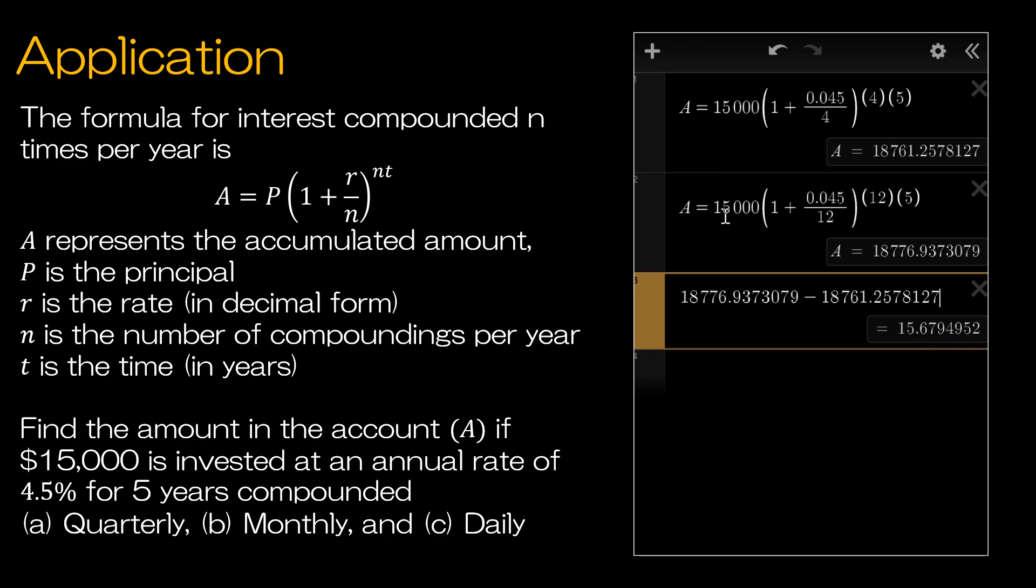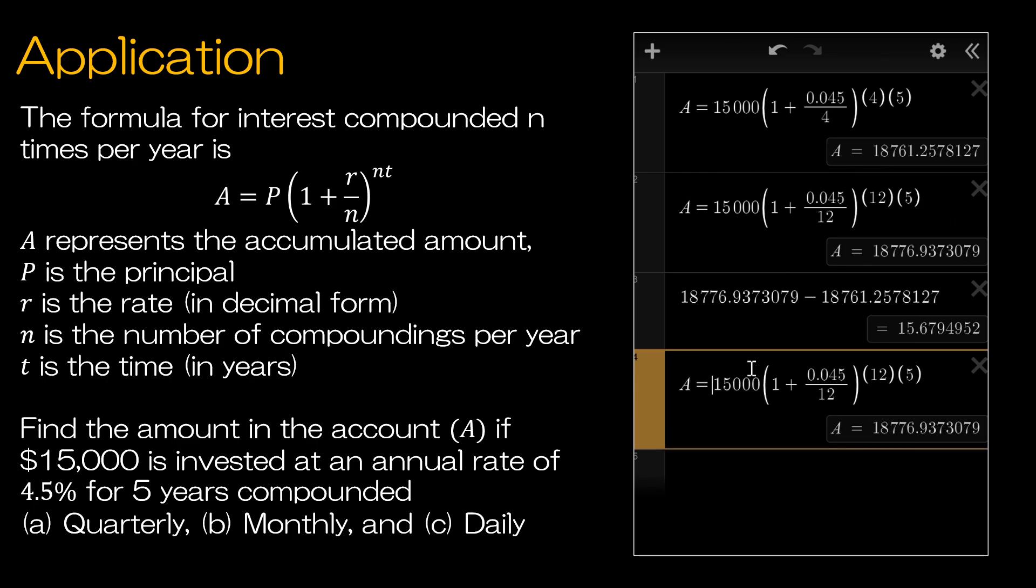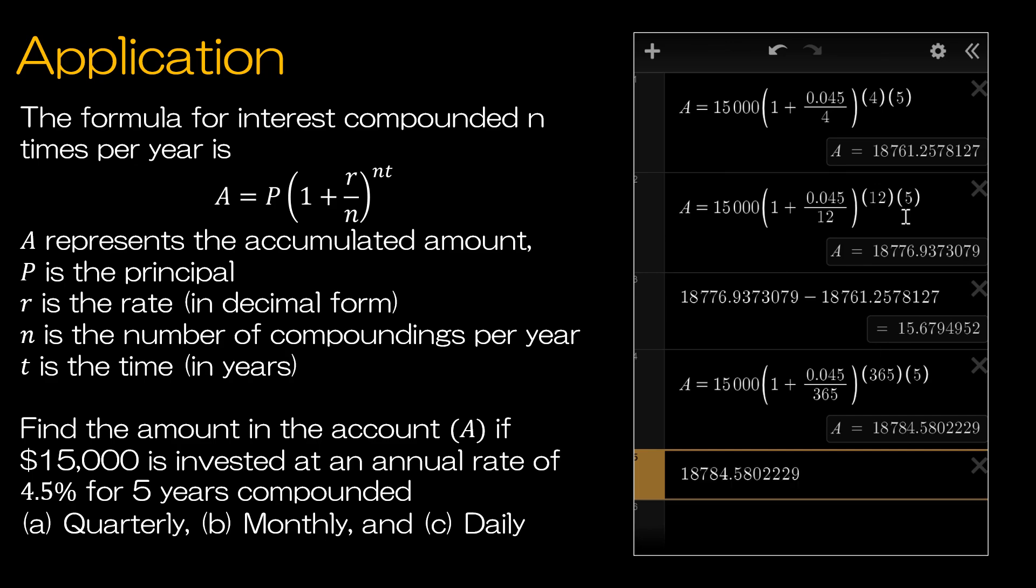Now let's do that one more time. I'm going to take all of this. And instead of 12, I'm going to replace it with daily. So 365.25 days per year, but we'll just stick with 365. And I can see again, in five years, I've made a little bit more. So if I compare that to the original just every quarter, I've made an extra $23.32.